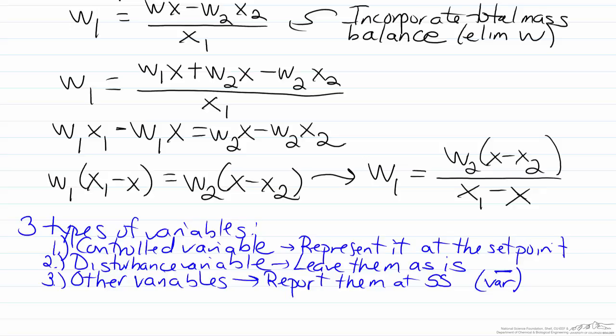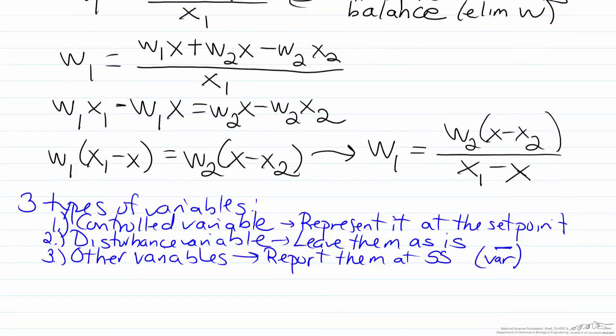If we look at what we have here, our controlled variable, the variable we are trying to control, is X. Our disturbance variables are W2 and X2, and if we look at what is left, that leaves us with our other variable as X1.